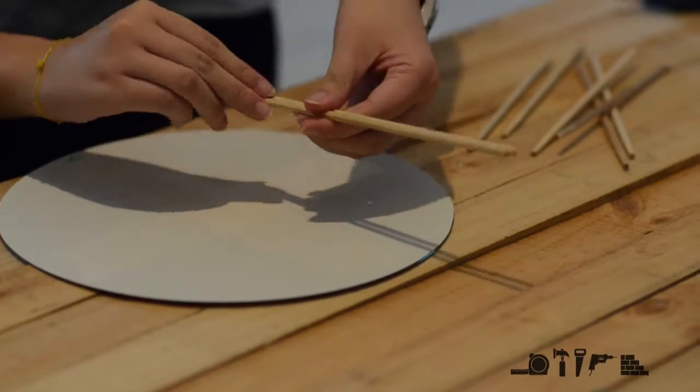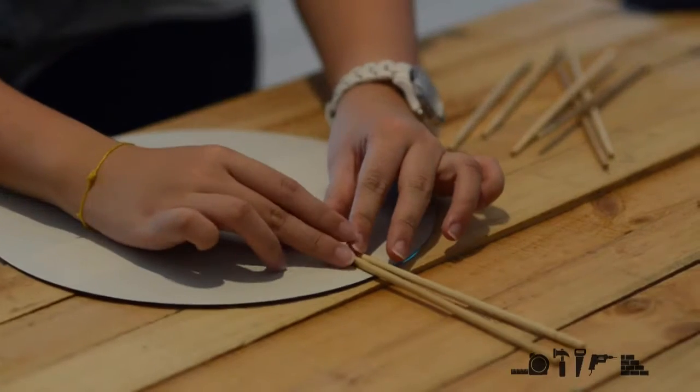After that, use masking tape to secure the intersecting lines on the mirror surface as a guide.